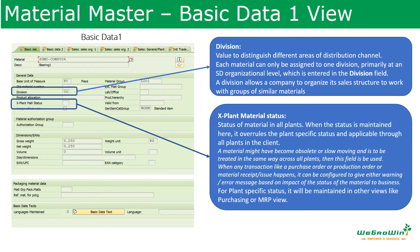Next is the cross-plant material status. This is the status of a material that is common for all plants. For example, when a material has become obsolete, slow-moving, or when goods receipt needs to be stopped or a warning given, restrictions can be defined here. Based on this status we can restrict processes like creating a purchase order, a production order, performing goods issue, or other transactions. Whatever is defined here is applicable to all company codes and all functions.